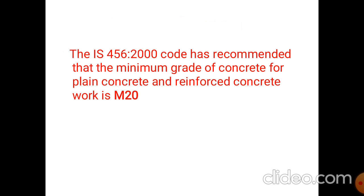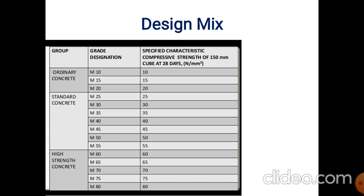We use the correct method for three sizes. The mix design classification: first is ordinary — M10, M15, M20. These are ordinary concrete grades.